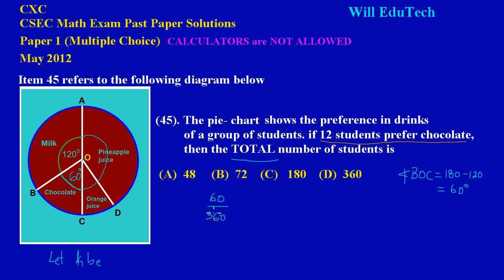So really what I'm taking is 60 out of 360 as a fraction. I could simply say let K be the total number of students. So we could say 60 over 360 multiply by K, and remember K is the total number of students who took part in the survey, and that must be equal to 12. Hopefully this makes some sense, because 60 out of 360 in terms of degrees prefer chocolate, and the amount of persons who prefer chocolate of the total amount of students worked out to be 12.